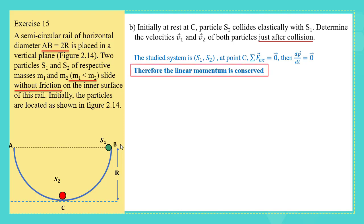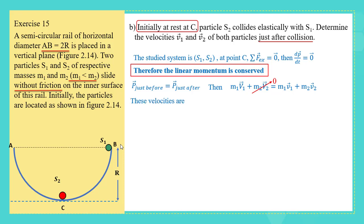Since M2's velocity before collision is zero (it was at rest), and the velocities are collinear, we write the momentum conservation equation algebraically as: M1 V1 = M1 V1' + M2 V2'. Rearranging, M1(V1 − V1') = M2 V2'. This is equation one.